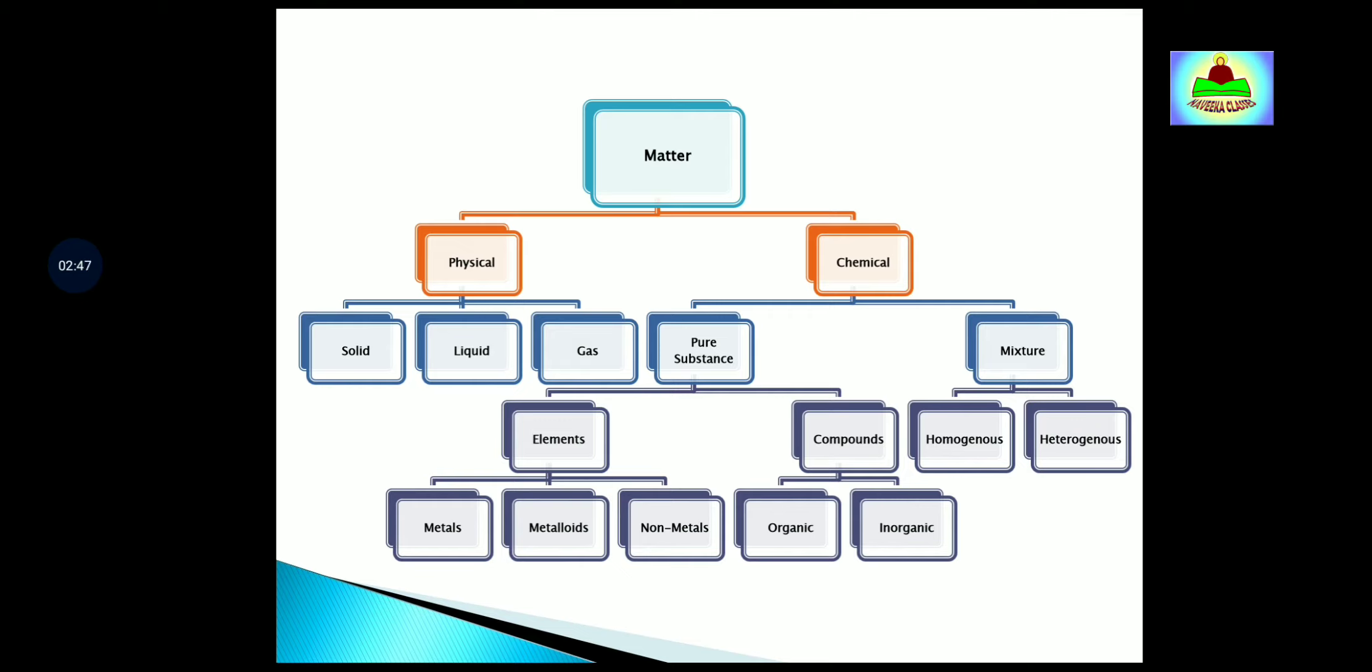Now next is compounds. Compounds are of two types. On the basis of their source of origin, they are divided into two parts: organic and inorganic. Organic are those whose origin is living, for example, fats, carbohydrates, and proteins. Inorganic examples are NaCl (rock salt), NaHCO3 (baking soda),